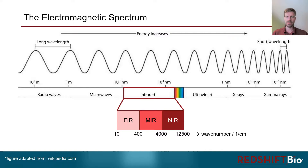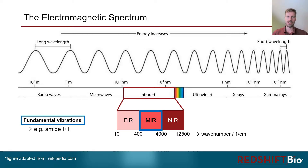It ranges from about 10 to roughly 12,500 wave numbers and is divided into the near, mid, and far infrared region. Generally speaking, IR light probes vibrations of molecules or certain functional groups. Specifically, the mid-infrared range from 400 to 4000 wave numbers is often used for protein analysis, as it covers the fundamental vibrations of protein backbones known as the amide-1 and amide-2 bands.